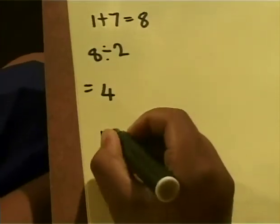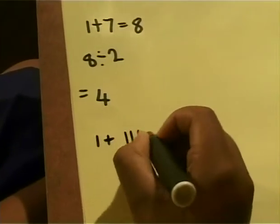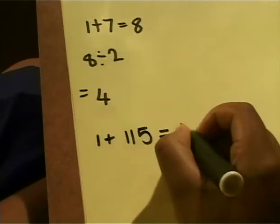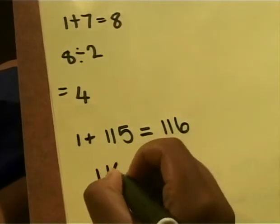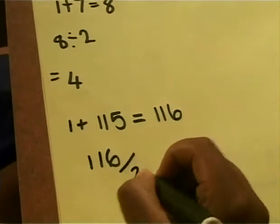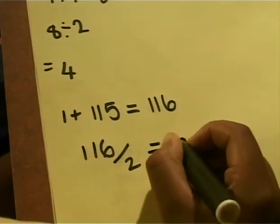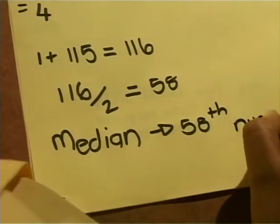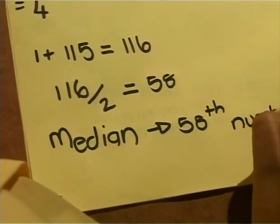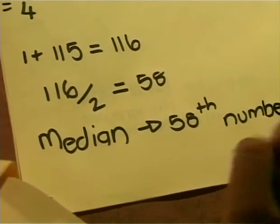Let's see — if I have a set of 115 numbers, 1 + 115 = 116, and 116 ÷ 2 = 58, so the median will be the 58th number. Well done! Now for the last kind of average: the mode.